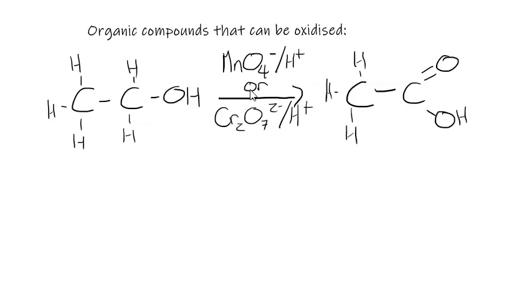And so depending on which oxidant we used, we would observe different things. So if we used permanganate, we would observe this going from purple to colourless, as the permanganate changes to manganese ions. And if we used dichromate, then we would observe this going from orange to green, because the dichromate would turn to chromium ions, which are green. So that's the first organic compound that can be oxidised.